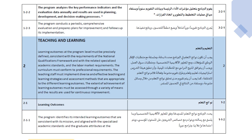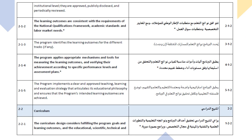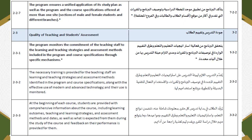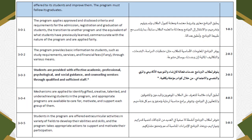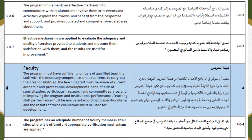The second standard is teaching and learning. Within teaching and learning, there are three new substandards: learning outcomes, curriculum, and quality of teaching and student assessment — with approximately 16 criteria in total. The third standard is students, which now includes two essential criteria.